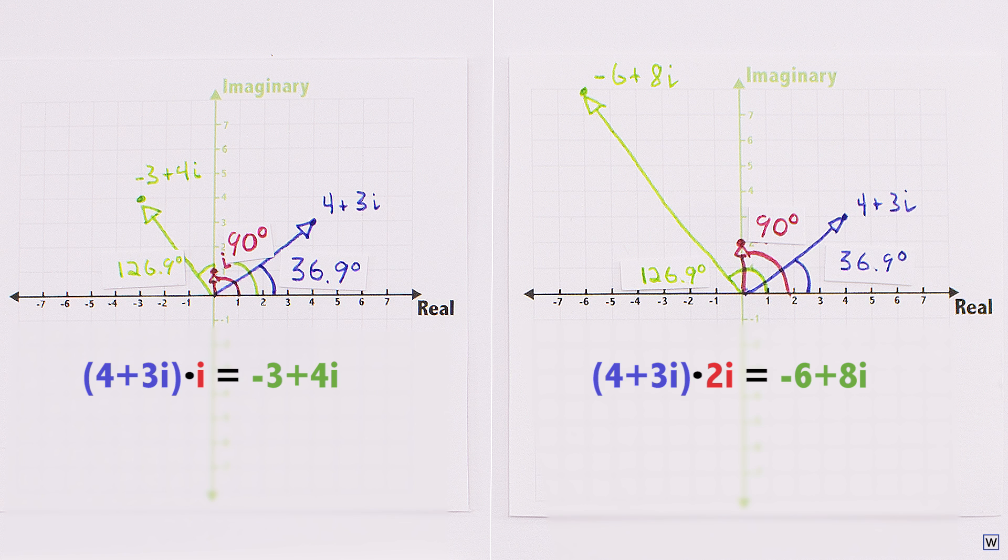There is something else going on. So what is the difference between these examples? It looks like multiplying by 2i has pushed our result further from the origin than multiplying by i. A good follow-up question is, how much further?